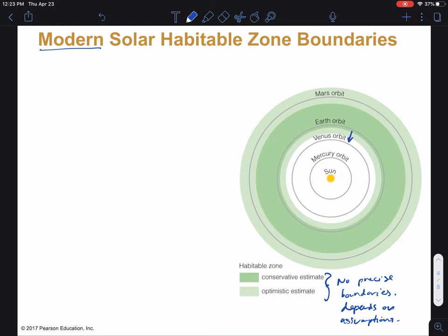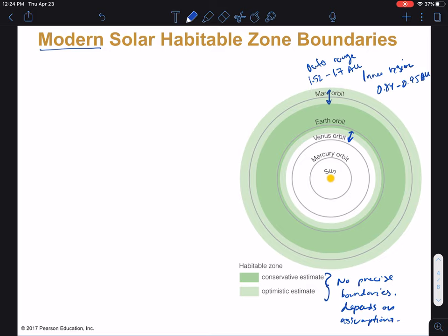So, things can change. We can have different assumptions about the strength of the greenhouse effect, things like that. So, this inner habitable zone is from, the inner region is from about 0.84 to 0.95 AU. It turns out Venus is just inside of the habitable zone in the region where it's too hot. The outer part here, the outer range, goes from about 1.52 to 1.7 AU. So, it turns out Mars is within our optimistic estimate of the habitable zone.